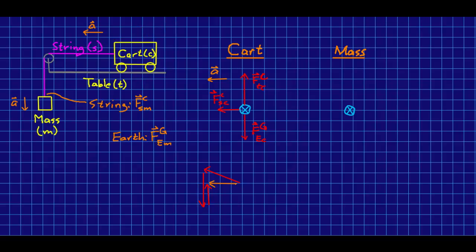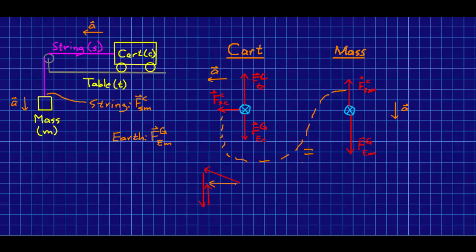Now I'll do the mass. The only contact force is the one due to the string, because that's the only thing the mass is touching, so it's a very simple free body diagram. I've deliberately made the gravitational force bigger than the force that the string is exerting, because we know that the acceleration of the mass should be down, and so the vector sum of forces should be down. The forces that the string is exerting on the cart and mass are probably quite a bit bigger than the gravitational force on the string, which means that these two forces — one on the cart and one on the hanging mass — should be about equal in magnitude.